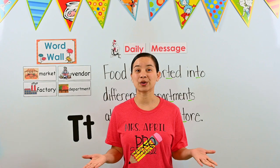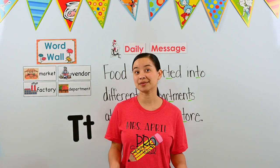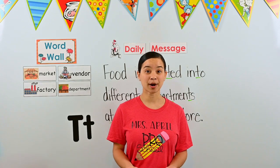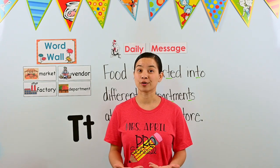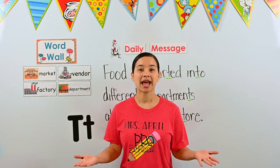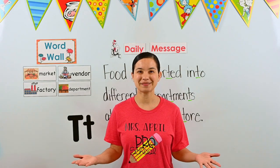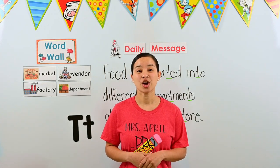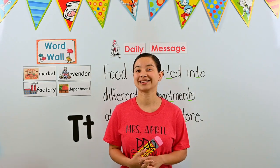Today we are going to do a sorting activity. We're going to sort food items into different departments. We just learned that there's a meat department, a produce department, a dairy department, a bakery department, and a frozen food department. You're going to see lots of pictures of things we can find in a grocery store, and you're going to tell me what department each one belongs to. You think you can help?